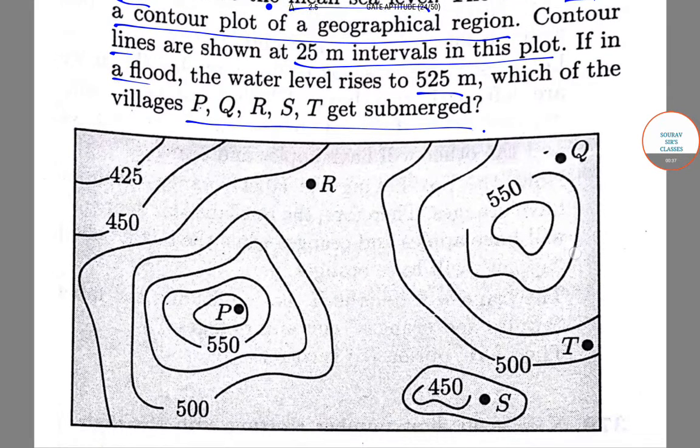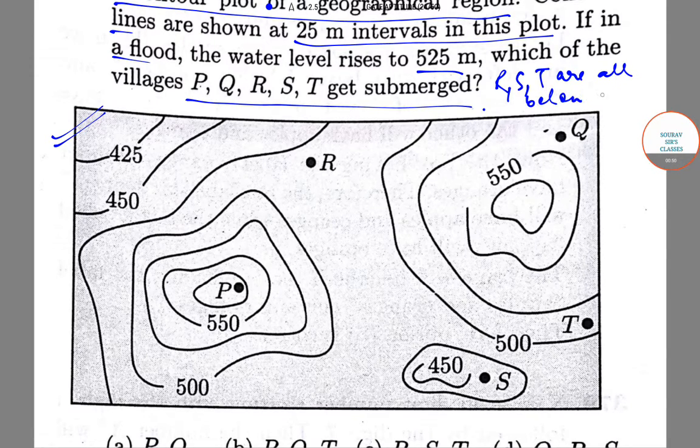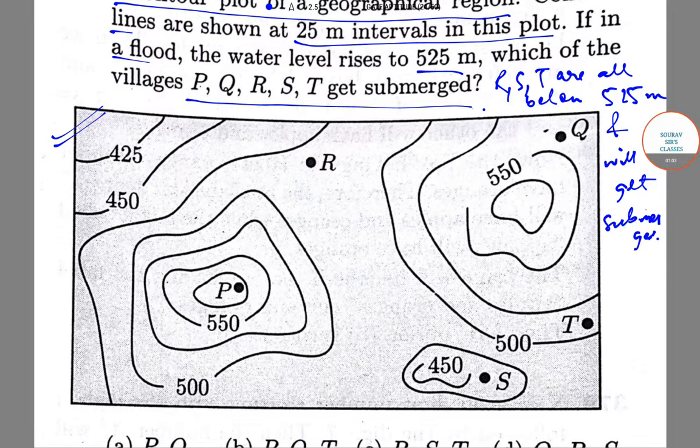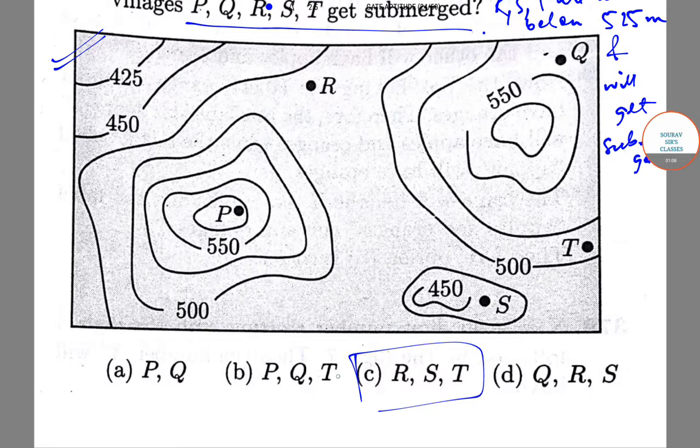Now, if you'll notice this contour map, we see that R, S, and T are all below 525 meters and thus will get submerged. Therefore, the correct option is option C.